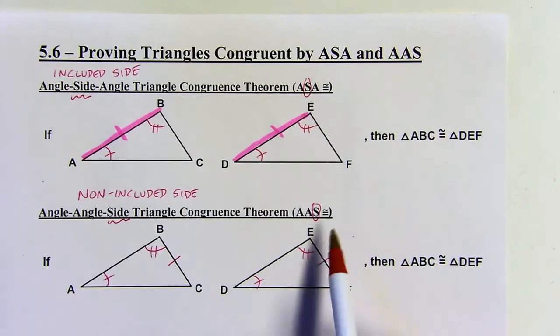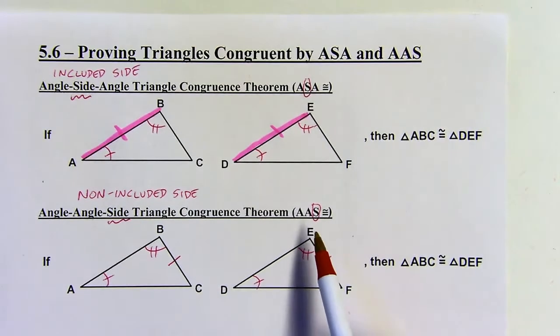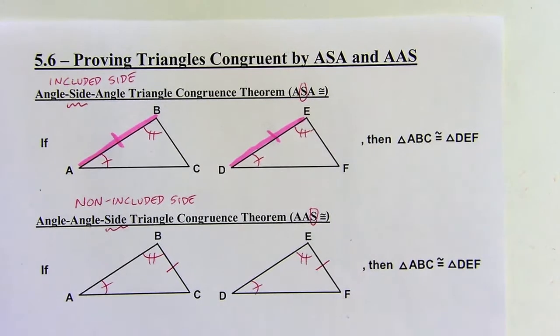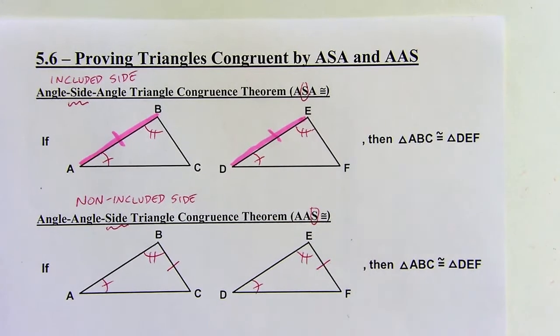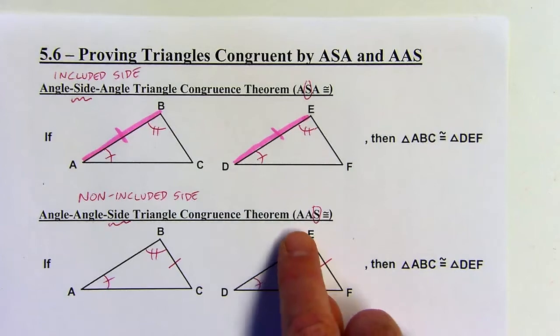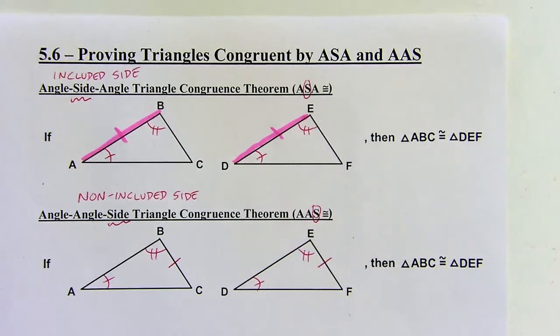Sometimes I see people call this SAA, which I understand, but it's always written as AAS. So that's two angles and a non-included side — two pairs of angles.